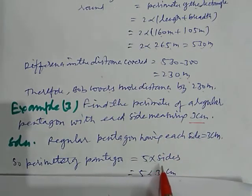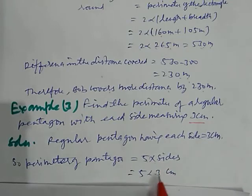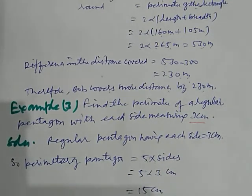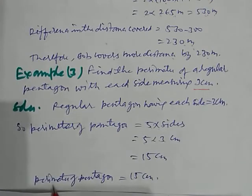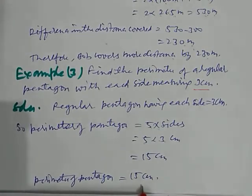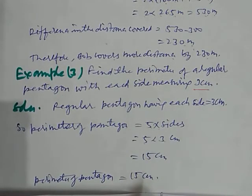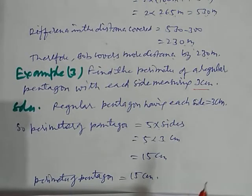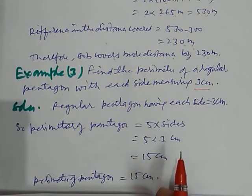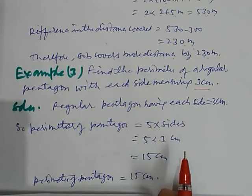So by putting the value of side 5 into 3 centimeter, that is 15 centimeter. So the perimeter of pentagon is 15 centimeter. So this way you can solve your problems of this exercise.